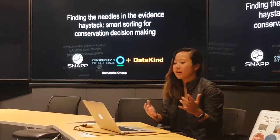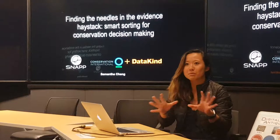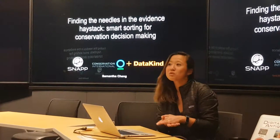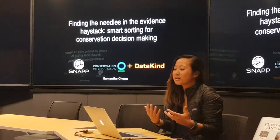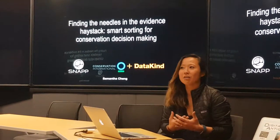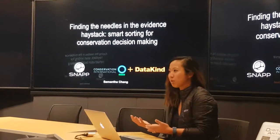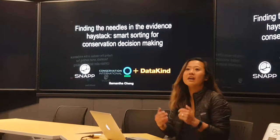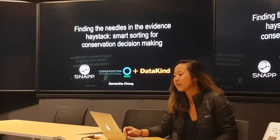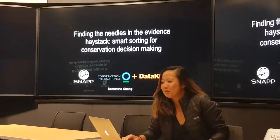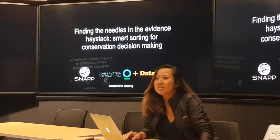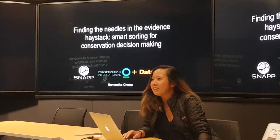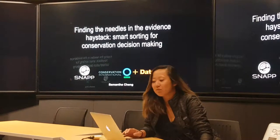A bit of background: I work in the conservation and development space, so I have both training in natural sciences and in social sciences. A lot of the work I do is helping different groups figure out, if we want to make the best-informed decisions for a particular outcome or context, how do we do it and where do we find that information? I'm going to talk about some work we've done in applying machine learning to this, and what are the problems and benefits of taking this kind of approach.